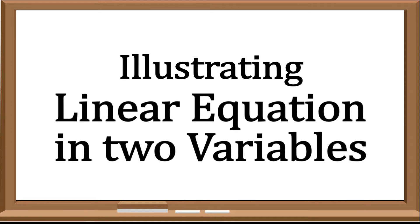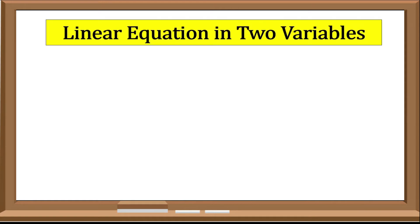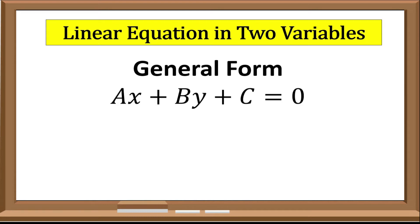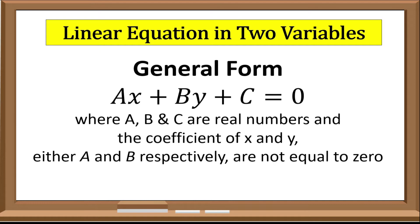An equation is said to be a Linear Equation in Two Variables if it is written in the general form of ax plus by plus c equals zero, where a, b, and c are real numbers, and the coefficients of x and y — a and b respectively — are not equal to zero.